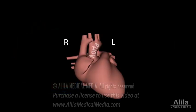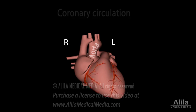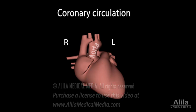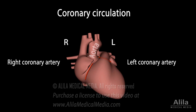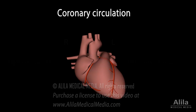The heart supplies itself via a network of blood vessels called the coronary circulation, which branches out from the aorta as soon as it exits the heart. A blockage in any major coronary artery may cause heart attacks.